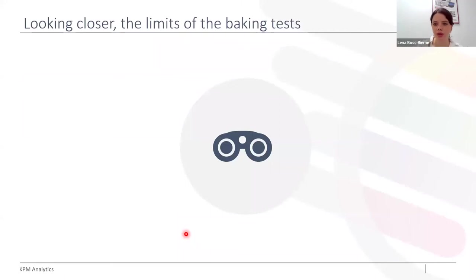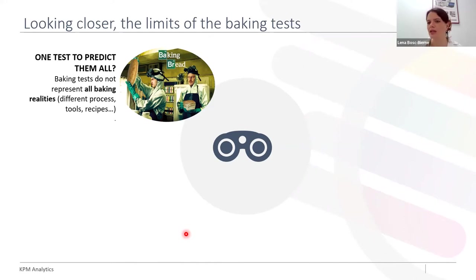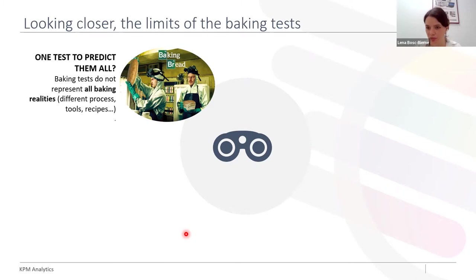Let's look at the limits of baking tests in more detail. We have a few standardized baking tests: the Sponge and Dough method, the Paget test here in France, and the RMT rapid mix test method in Germany. But they do not represent your reality with your machines, your operators, your tools and recipe. Those are standardized baking tests, and so they cannot be absolutely representative of your reality. There is a bias we need to take into account.